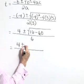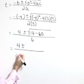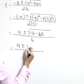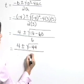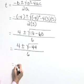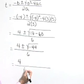Continuing to simplify, this value under the radical, this numerator becomes 4 plus or minus the square root of negative 44 all over 6. Now this is going to lead us into the complex number system because we've got the square root of a negative value.